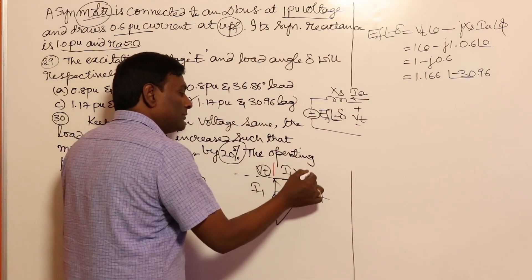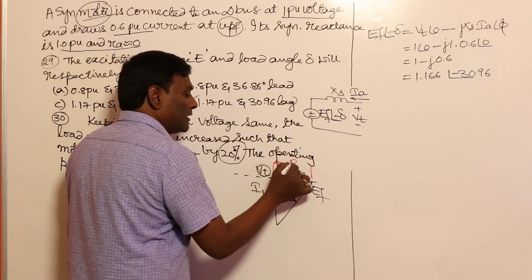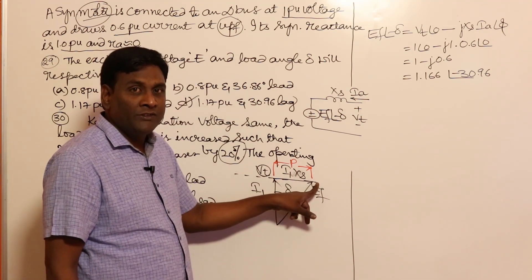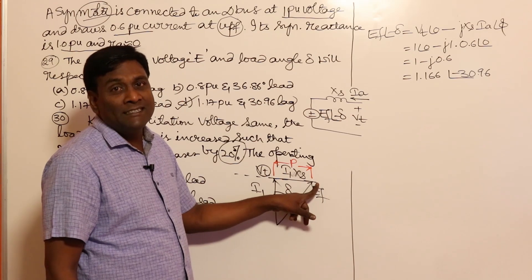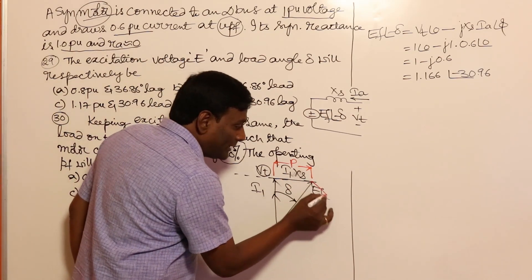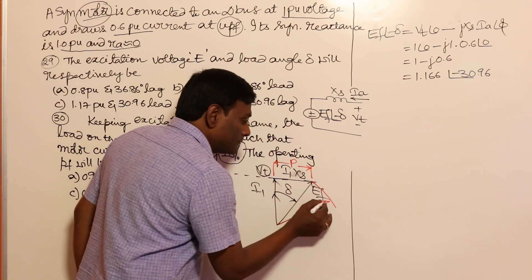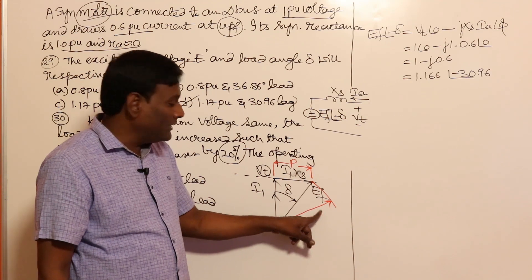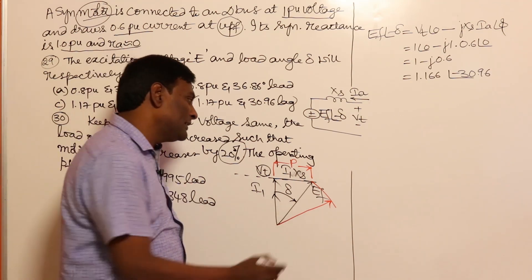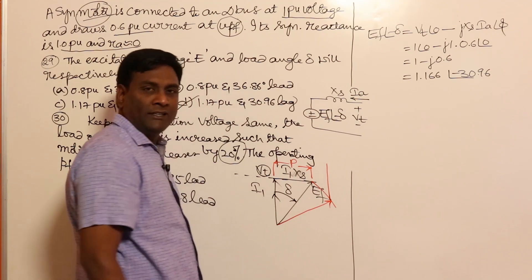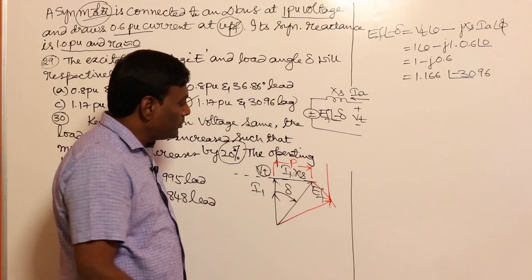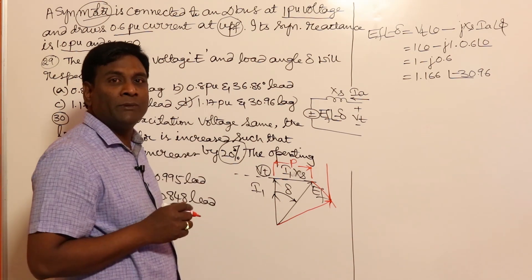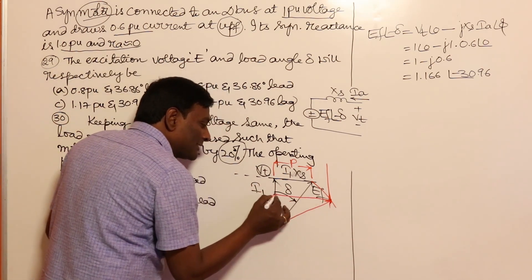Forget about calculations — let us see whether it will become lagging or leading. We have drawn the phasor diagram. Here, EF·sin(delta) represents the power in the first case. Now the length of EF should be the same but output power is increased, so my EF in the second case should be dragged here. Length of black EF and red EF is same, but delta is increased, so EF·sin(delta) is increased — that's the output power.